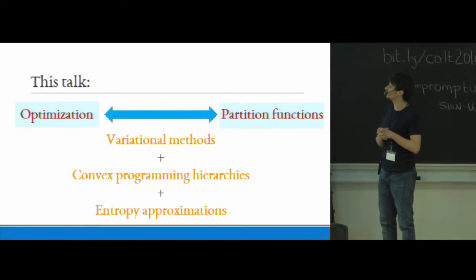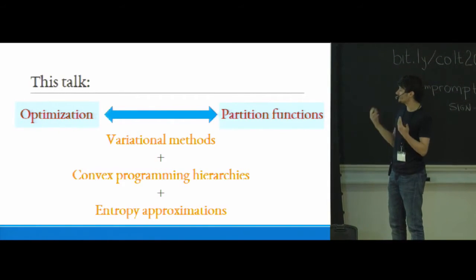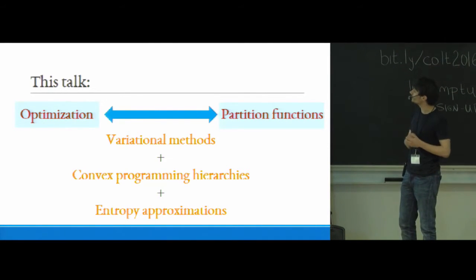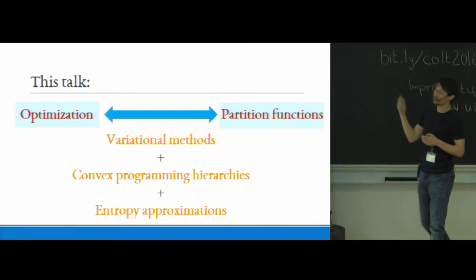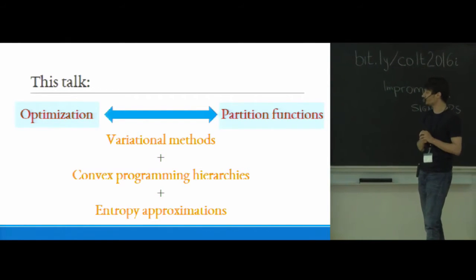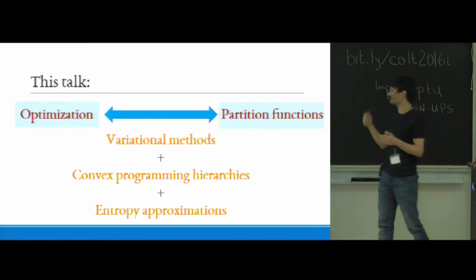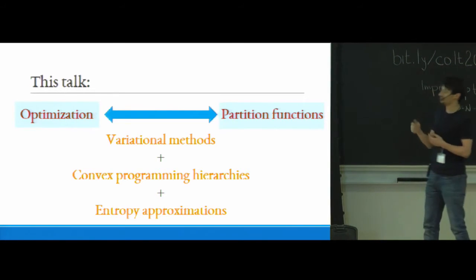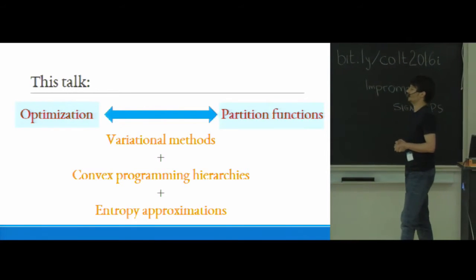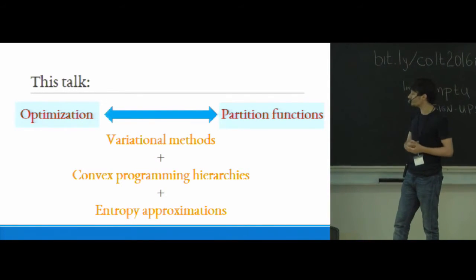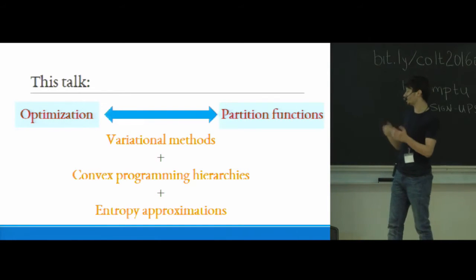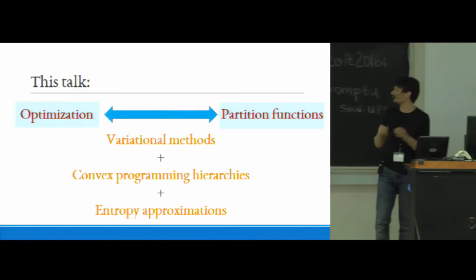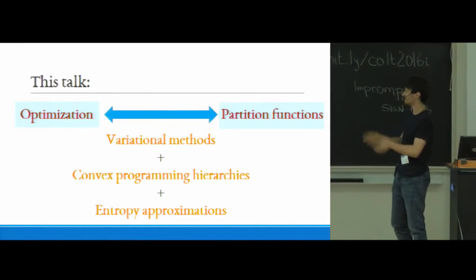So what is this talk going to be about? So I'm going to show you how, essentially, how certain results and intuitions that we have in some problems in optimization can be basically used to get algorithms and guarantees for calculating partition functions. And the recipe, or sort of the sugar, spice, and everything nice if you want, will be to combine variational methods with, well, a session named convex programming hierarchies, and also approximations of the entropy of a distribution based on its low-order moments. You will see very soon what this actually means. So if you're going to take away one thing from this talk, take away this slide.